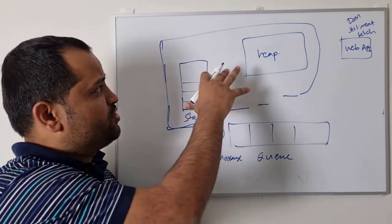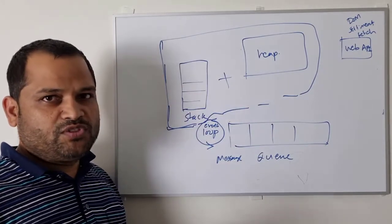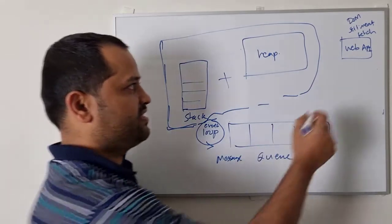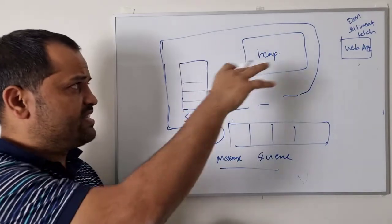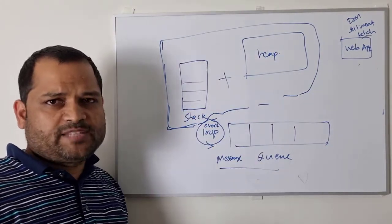Now this part is very easy to understand because in most of the programming languages, this stack and heap concepts are used. Now the interesting thing that happens in the JavaScript runtime environment is this thing: Web APIs, message queue and event loop. So what is the need of these three components in the JavaScript runtime environment? Let me explain this thing.